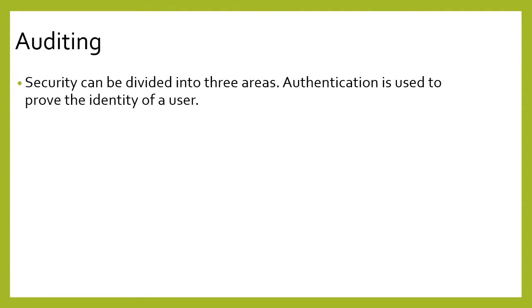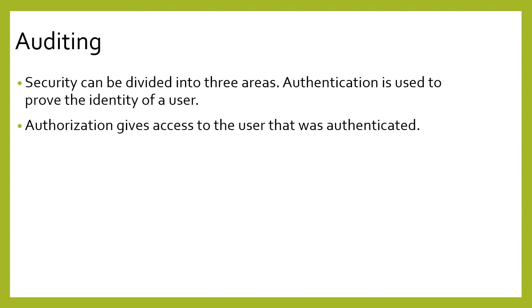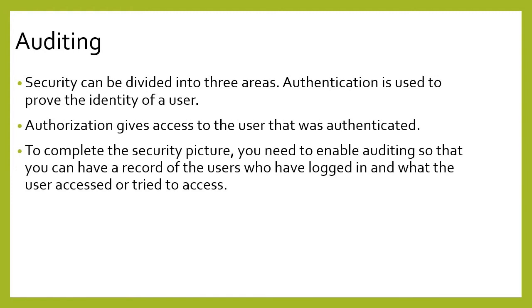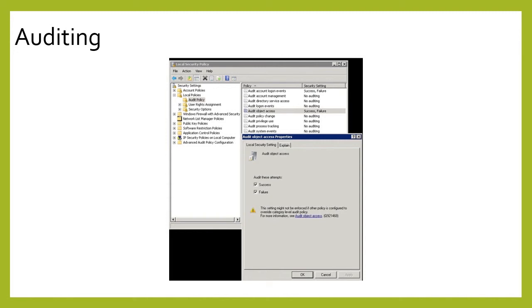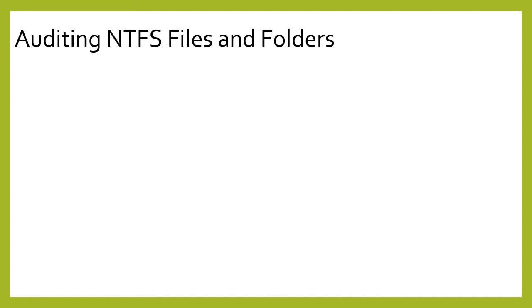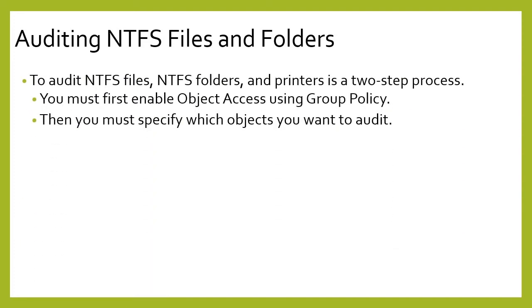Security can be divided into three different areas. Authentication is used to prove the identity of the user. Authorization gives access to the user that was authenticated. To complete the security picture, you need to enable auditing so that you can have a record of users who have logged in and what they accessed or tried to access. You must first enable object access using group policy, and you must also specify which objects you want to audit.